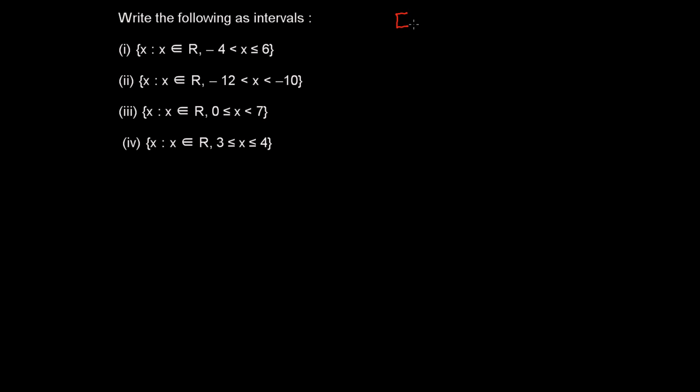We had learned closed intervals like this in which we were taking both. These are the two points, point A and point B, and this is a real number line. If you are taking this part also and this part also, then that is closed intervals. So how I will write here now? A and B I will write. This is closed interval.